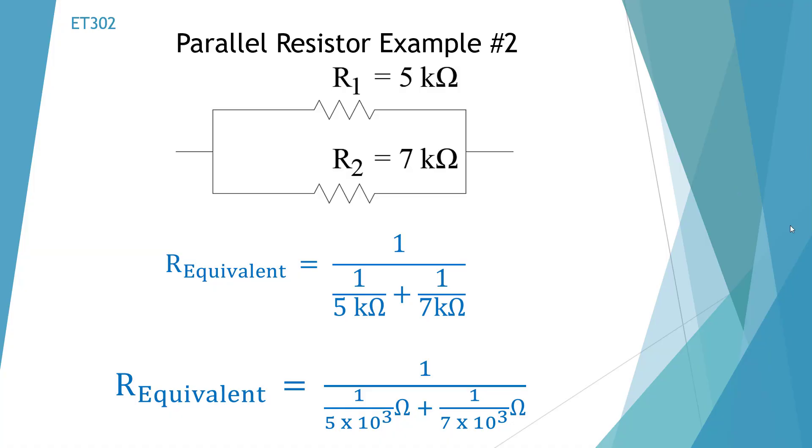Here's our parallel resistor example 2 and this time I'm using a multiplier. These are k ohms which is a thousand ohms. And again I put it in the formula. So a k is equal to 10 times 10 to the power of 3.